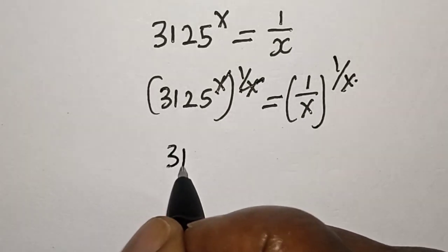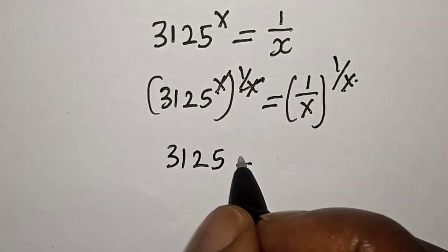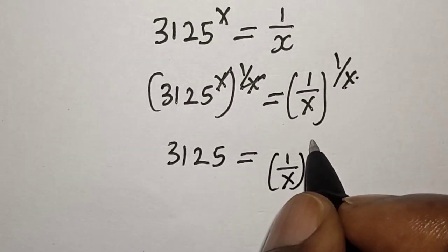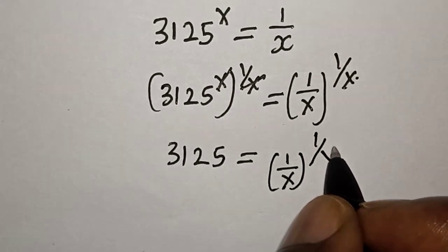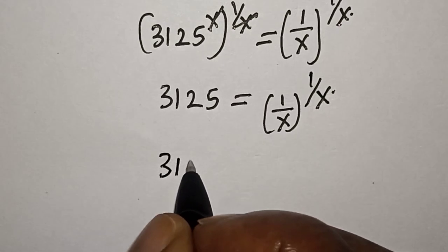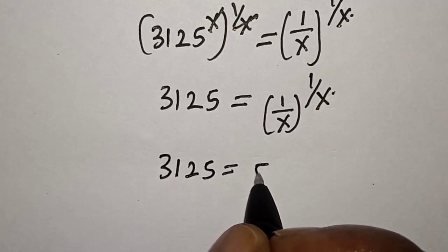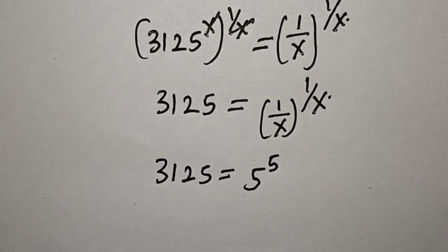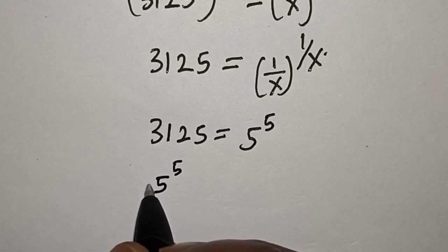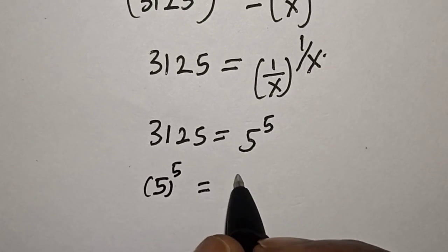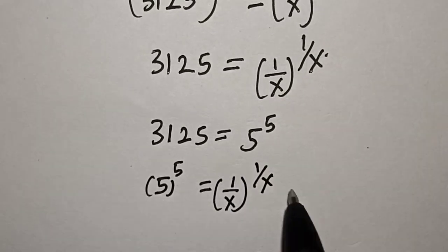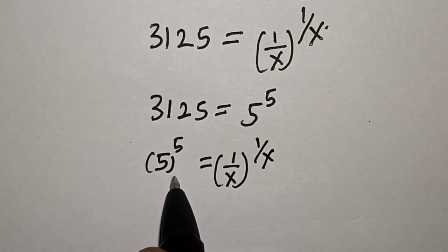This simplifies so that 3125 is equal to 1 over s raised to the power 1 over s. For the left-hand side, 3125 is equal to 5 raised to power 5, so this becomes 5 raised to power 5 is equal to 1 over s raised to the power 1 over s.